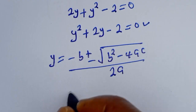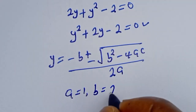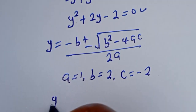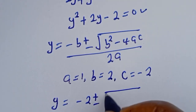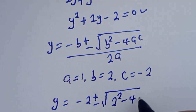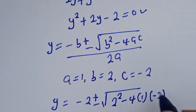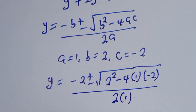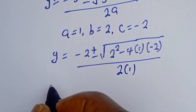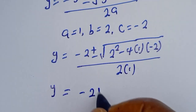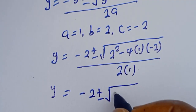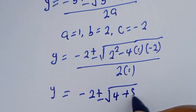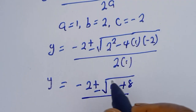From the equation, a equals 1, b equals 2, and c equals minus 2. So y equals minus 2 plus or minus the square root of 2 squared minus 4 times 1 times minus 2, which is 4 plus 8, over 2 times 1, which is 2.